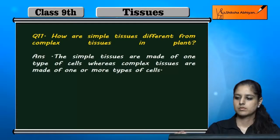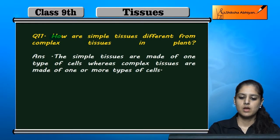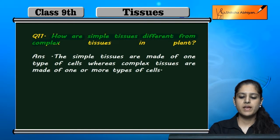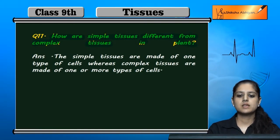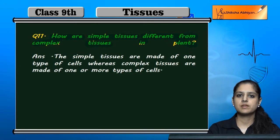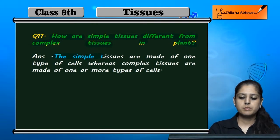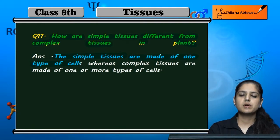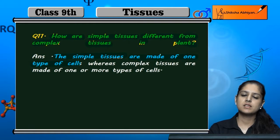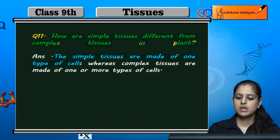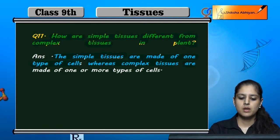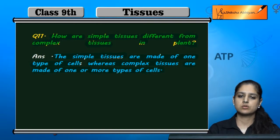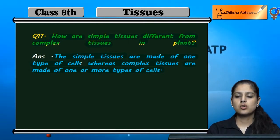Question 11: How are simple tissues different from complex tissues in plants? Simple tissues are made of one type of cells. Complex tissues, on the other hand, are made of one or more types of cells, and it is this variety of cells that forms the complex tissues.